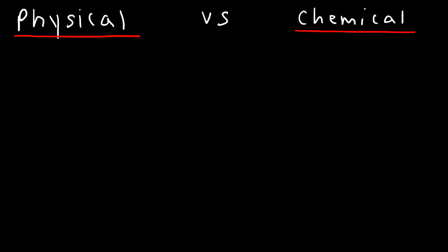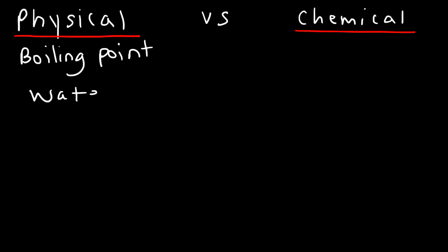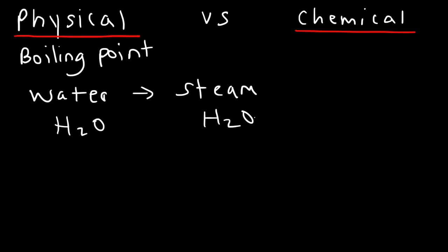For example, boiling point. The boiling point of a substance is a physical property. When water boils, when it converts from a liquid to a gas — when it goes from water into steam — it's still water. The chemical identity is still H₂O. So, if the chemical identity hasn't changed, you have a physical change. And boiling point is a characteristic of water; it's the temperature at which water boils.